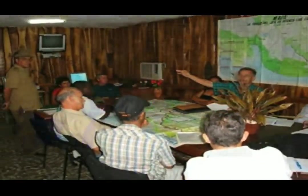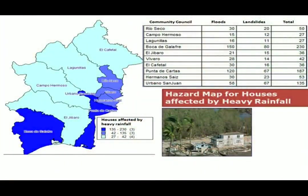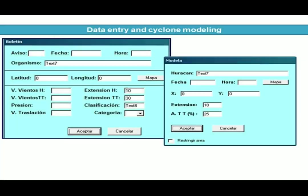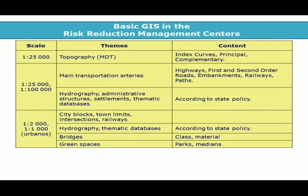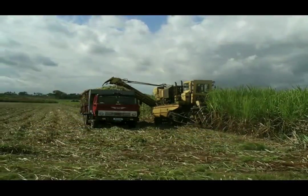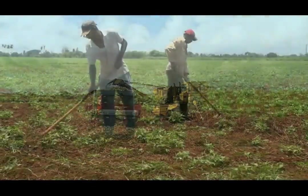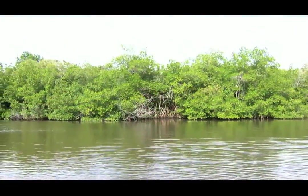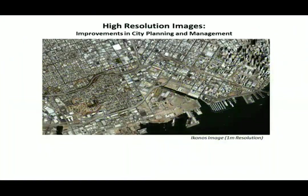One important tool used in the centres is Geographic Information Systems, or GIS. GIS is a system used to enter, store, recover, manipulate, analyze, and present geo-referenced data, with the goal of supporting local decision making in areas such as planning, land use, the environment, transportation, urban infrastructure, risk management, and others.